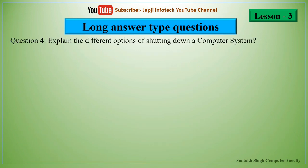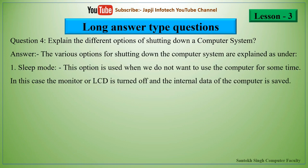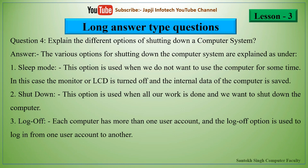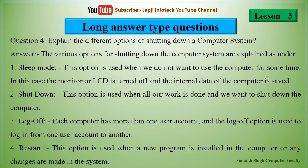The fourth question is: explain the different options for shutting down a computer system. The first option is sleep mode — used when we do not want to use the computer for some time; the monitor/LCD is turned off and internal data is saved. The second option is shutdown — used when all work is done and we want to shut down the computer. The third option is log off — used to switch from one user account to another. The fourth option is restart — used when a new program is installed or changes are made in the system.